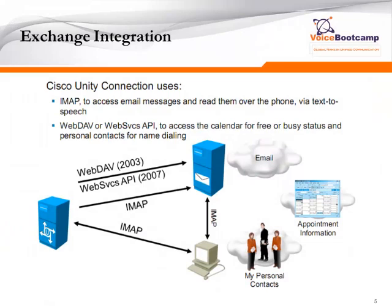For Exchange integration, IMAP will be used to access messages and read them over the phone or via text-to-speech. Exchange WebDAV Web Services API is used to access a calendar to see if the user is free or busy. For example, when you are calling...